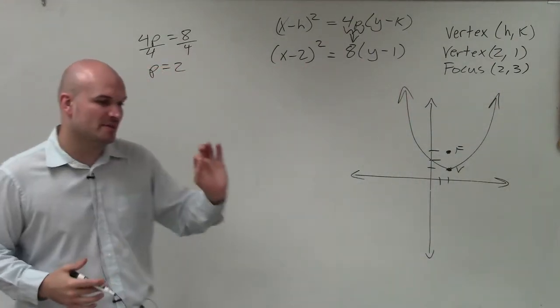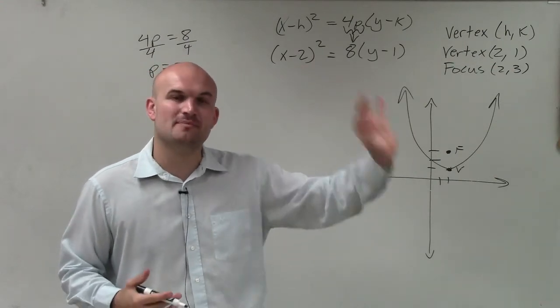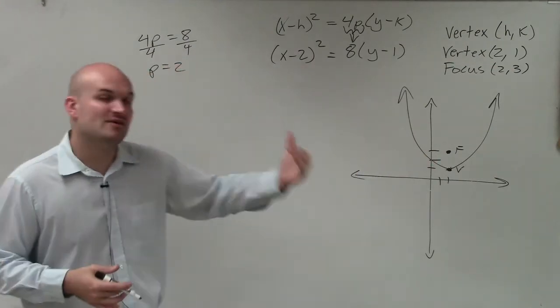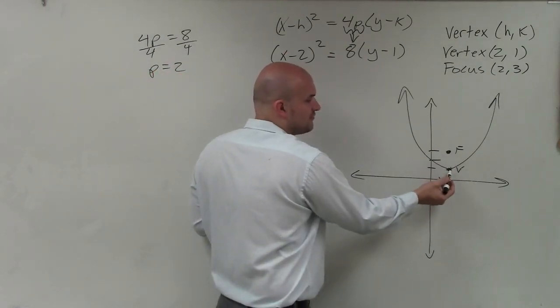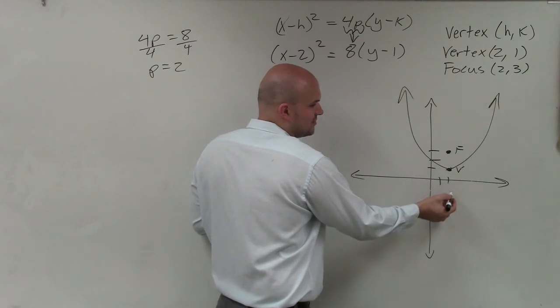Now remember, the distance from the vertex to the focus is equivalent to the distance from the vertex to the directrix. However, they're going to be in opposite directions. So from the vertex to the focus, if I go up 2, to go from the vertex to the directrix, I'm going to have to go down 2.